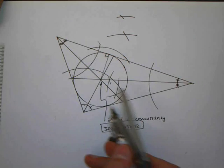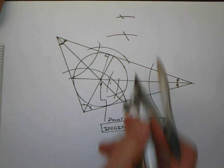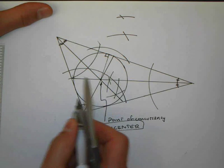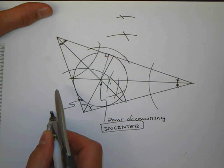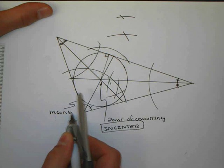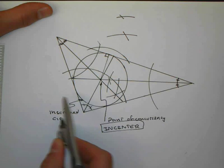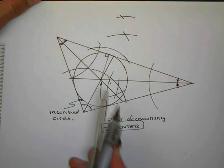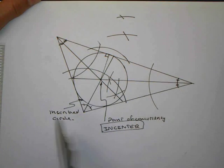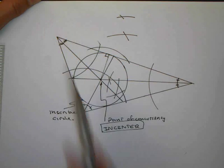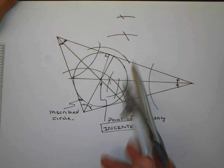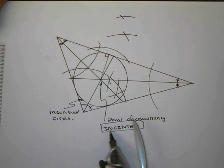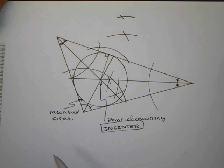So this circle is tangent to the three sides of the triangle. It fits neatly inside. It is known as an inscribed circle. Inscribed incenter. So, if you ever have a situation where you've got three lines that form a triangle and you want to find the one point that's the same distance from all three lines, what you're really asking about is, how do I construct the incenter? That's how you do it.